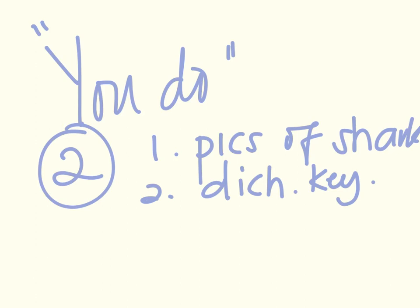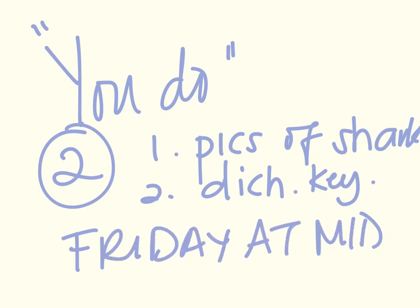Now you've done a few dichotomous keys, and it is time for you do. You're going to open two documents on Schoology — one is pictures of sharks and the other is the actual dichotomous key. You'll have to upload those to Notability or something and get those pictures side by side to identify the sharks. Put the name of the shark under the line, then submit it to Notability. There will be an assignment on there, and it is going to be due Friday at midnight. We won't have time to work on it Friday during class, so that is something you'll need to be working on.